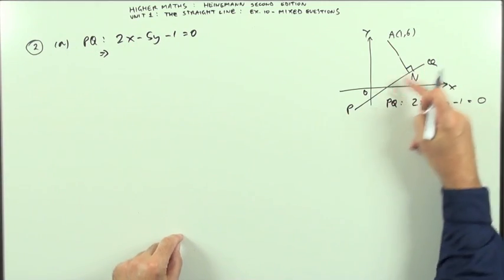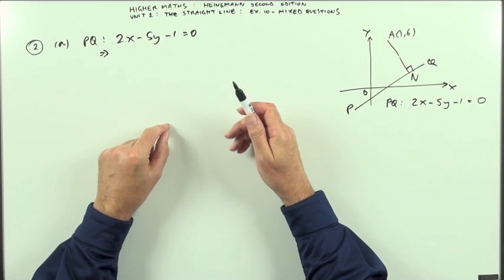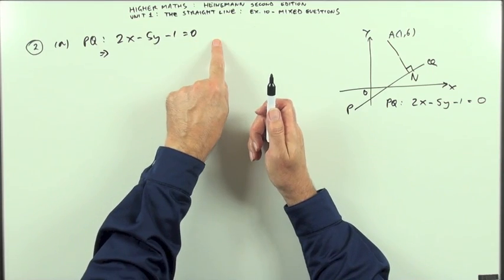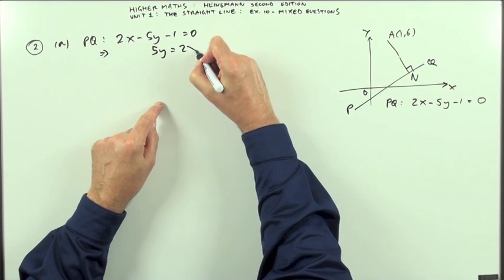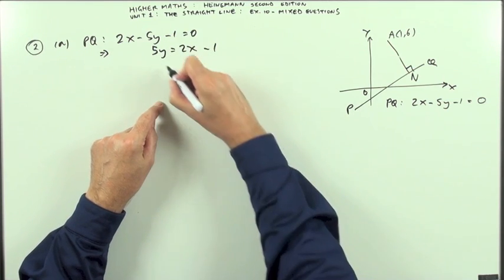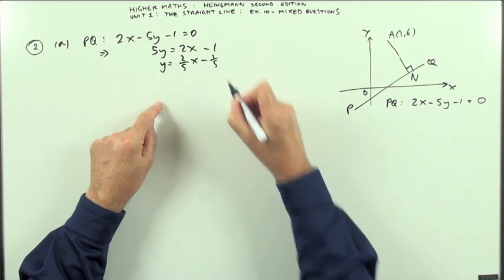You need to extract its gradient. What's its gradient going to be? Rearrange that equation. Again, you can do it in various stages. It'll be simple to take the 5y over to this side and then read it backwards. So you've got 5y equals 2x minus 1. Then y is going to be 2 fifths of x, then minus a fifth, that part doesn't matter.